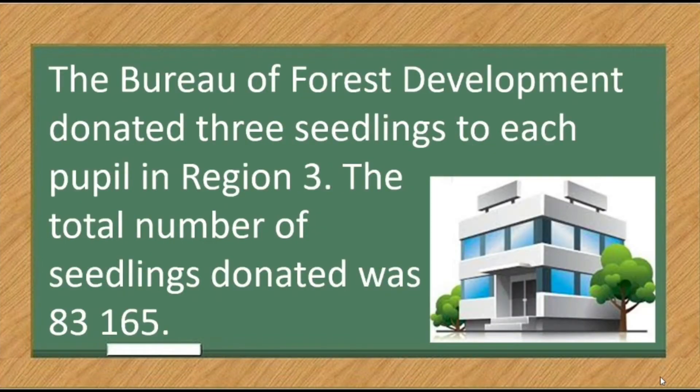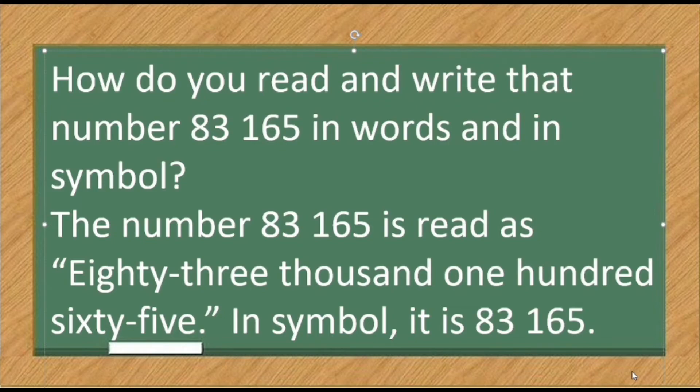Read and write numbers in symbols and in words up to 100,000. Example. The Bureau of Forest Development donated seedlings to each pupil in Region 3. The total number of seedlings donated was 83,165. How do you read and write that number 83,165 in words and in symbols? The number 83,165 is read as eighty-three thousand one hundred sixty-five. In symbols, it is 83,165.